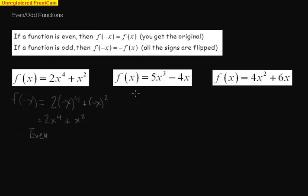Over here, we have f of x is 5x cubed minus 4x. So again, I'm going to plug in negative x to the equation. So I have 5 times negative x cubed minus 4 times negative x.